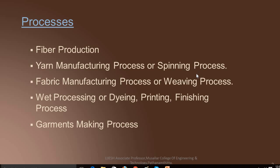The first process is fiber production, then yarn manufacturing or spinning process, fabric manufacturing or weaving process, wet processing including dyeing, printing and finishing, and garments making process. All these are the processes taking place in a textile industry, and now we will see how they pollute our environment.